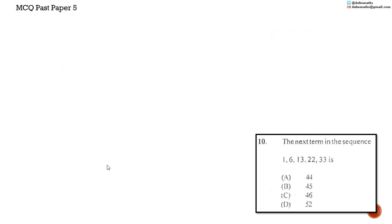Question 10: The next term in the sequence 1, 6, 13, 22, 33 is either A, 44, B, 45, C, 46, or D, 52.